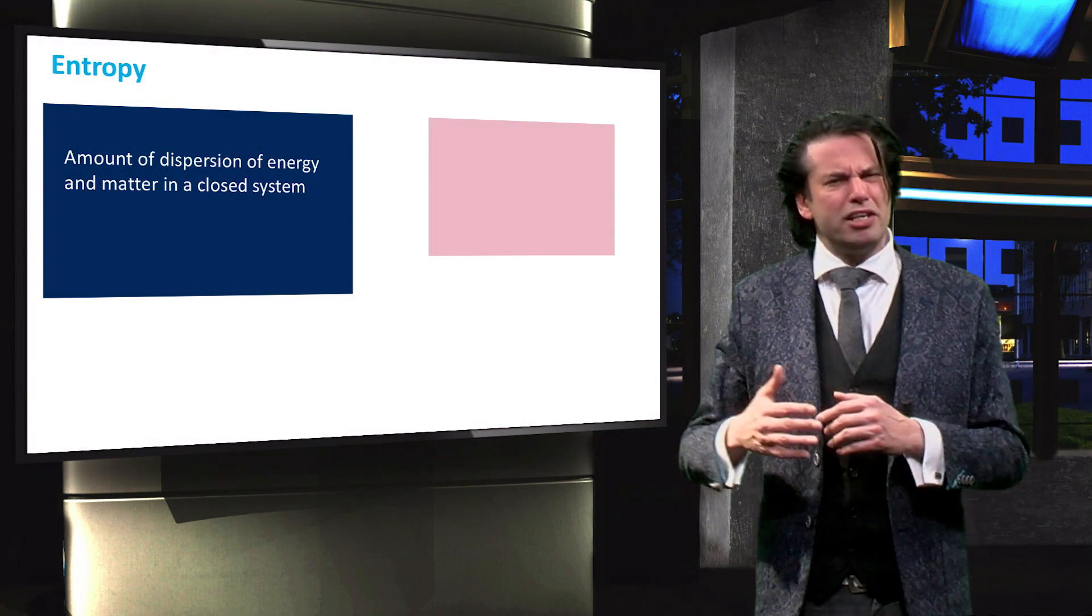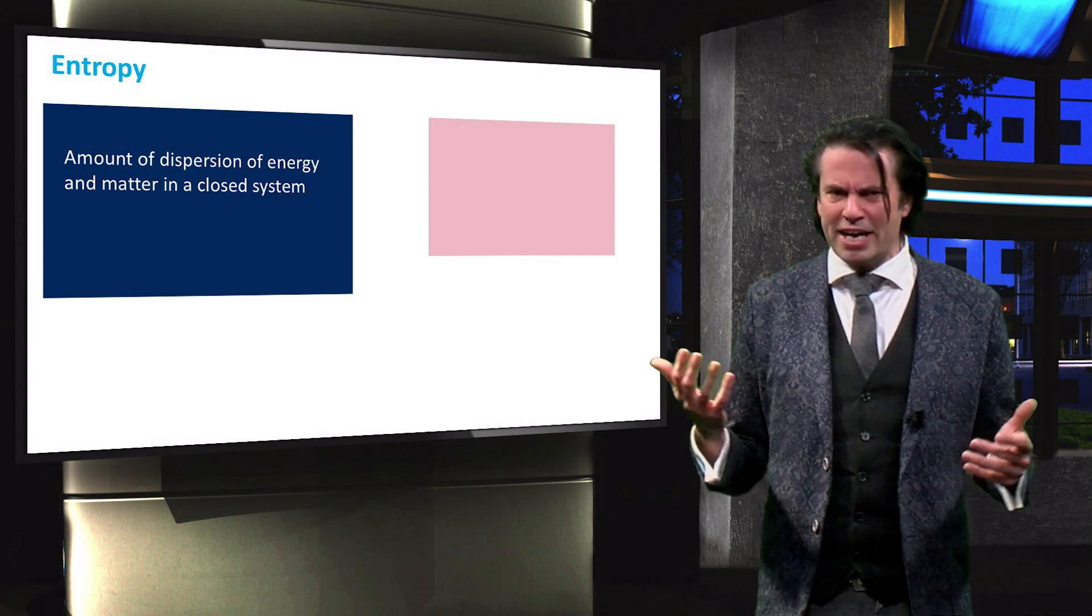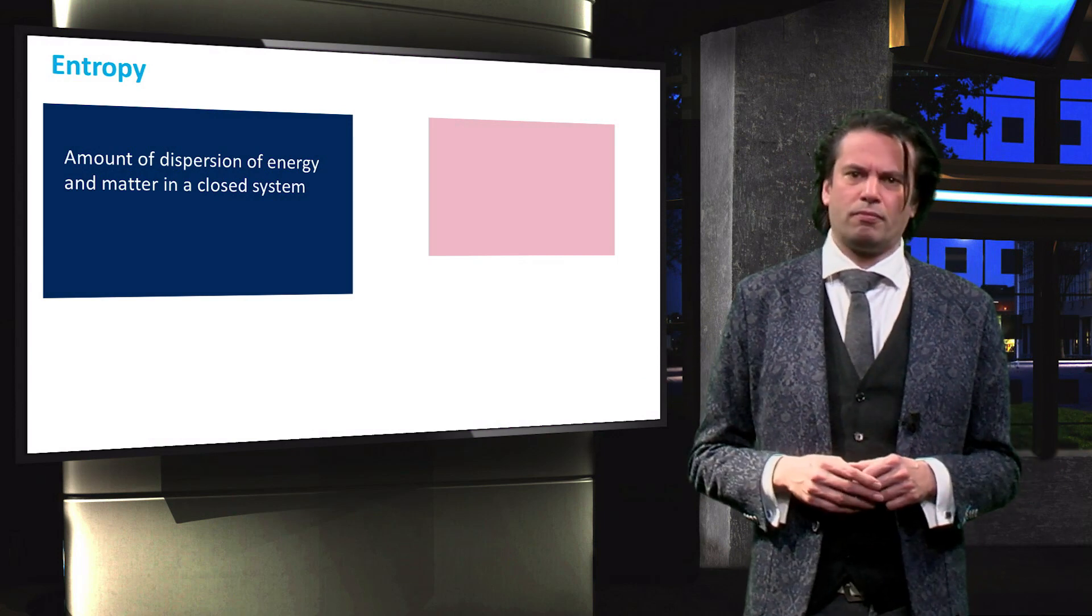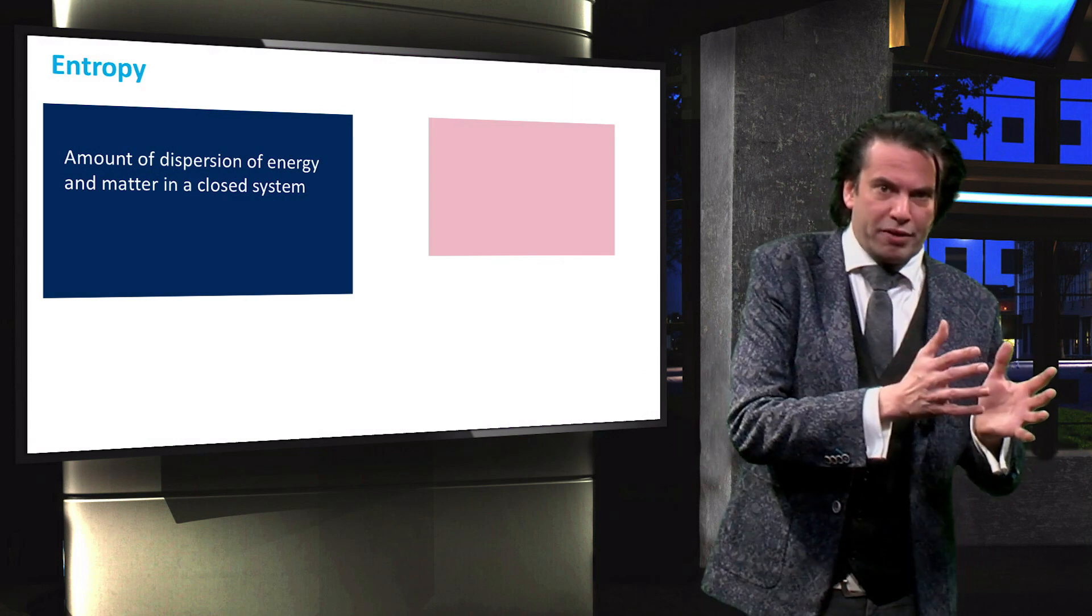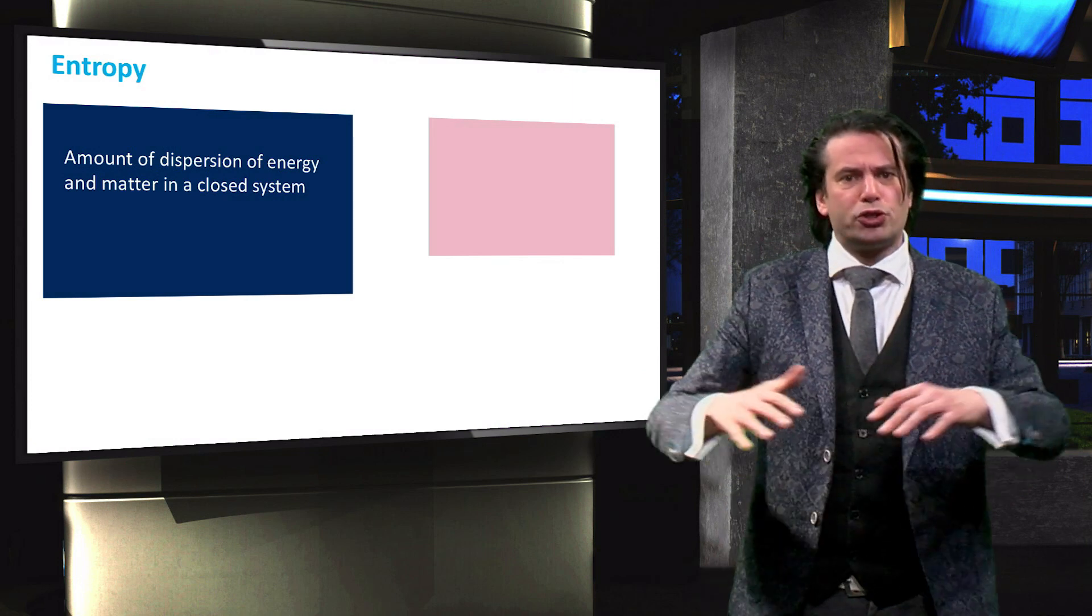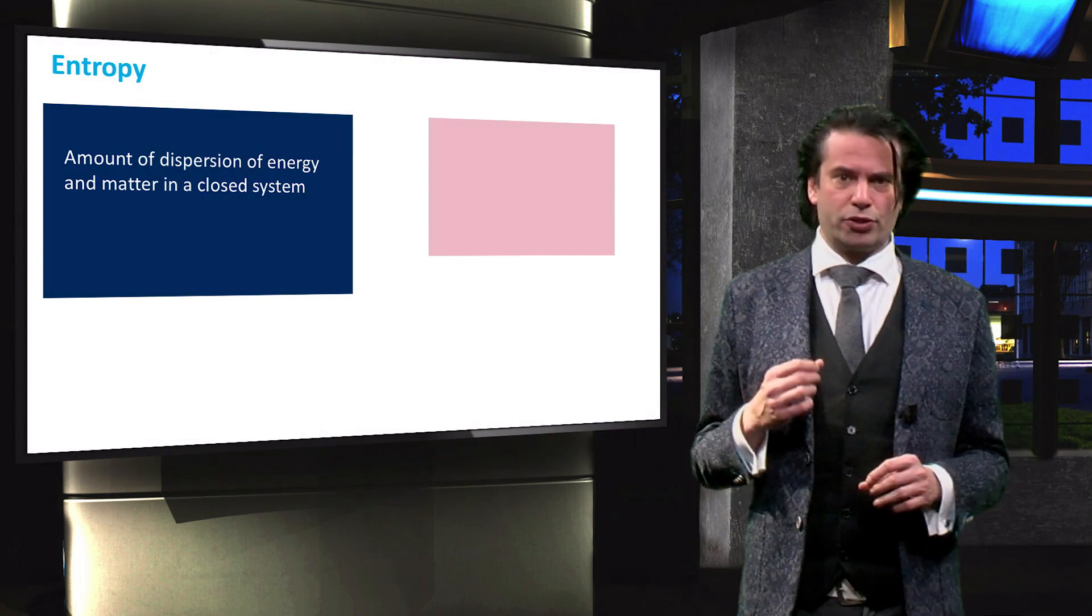We know from experience that when we remove the membrane, the hot liquid will diffuse into the cold liquid, producing a mix with a temperature somewhere in between. Where first the hot molecules were contained in a small area, they now have dispersed throughout the system and the entropy has increased.